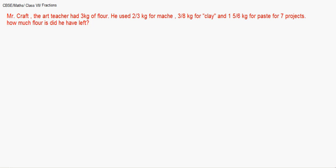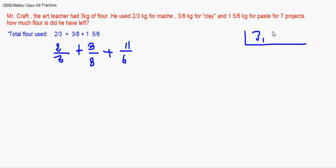Now let's add up how much he has used. Finding the total flour used. So we will be adding 2 by 3 plus 3 by 8 plus 1 whole 5 by 6 kg. So it is 2 by 3 plus 3 by 8. We need to convert 1 whole 5 by 6 into 11 by 6. So we need to see the LCM and convert these fractions into like terms. To do so, let's find the LCM. 3, 8 and 6.